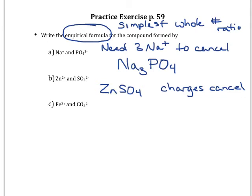So this last one, part C, I've got iron with a three positive charge and I've got the carbonate anion with a two negative charge. These are going to be a little bit harder to fit together. Obviously a three positive does not cancel with a two negative.